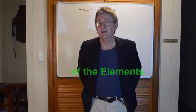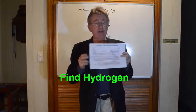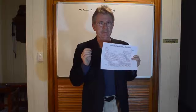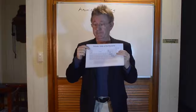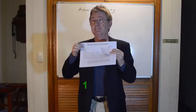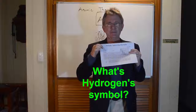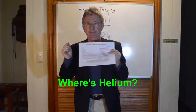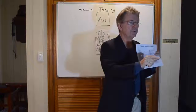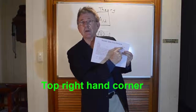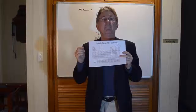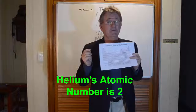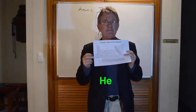What I'd like you to do is find hydrogen on your periodic table. Can everybody find hydrogen? Put up your hand if you can find it. Where is it? Top left-hand corner. So what's the little number at the top of the square? It's number 1 — that's its atomic number. And what's the letter? The symbol? Capital H. Now find helium. Where is it? Top right-hand corner. What's the number? Atomic number 2. And what's its symbol? He.